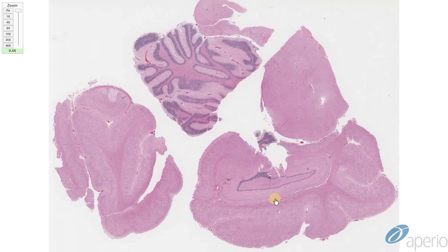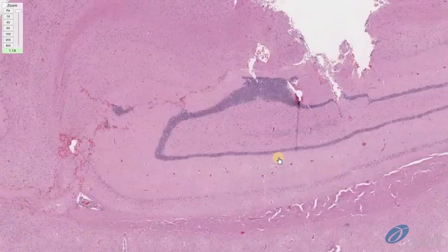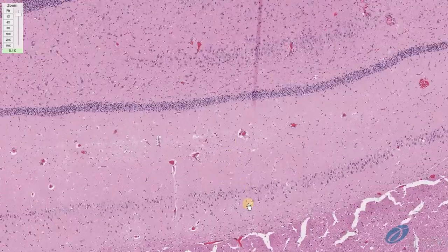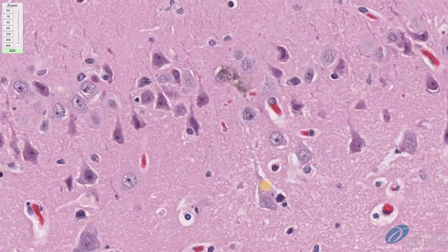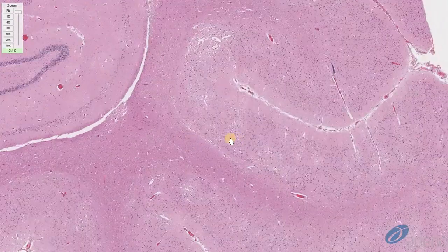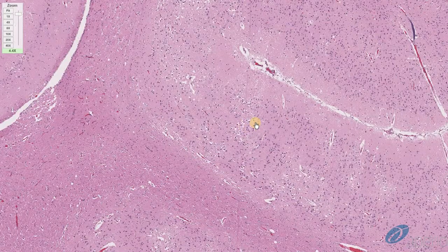This is another case from a mink, and the features are essentially the same. If we look at the hippocampus and the hippocampal neurons, we can see intracytoplasmic nigri body inclusions. But this case additionally has spongiosis.